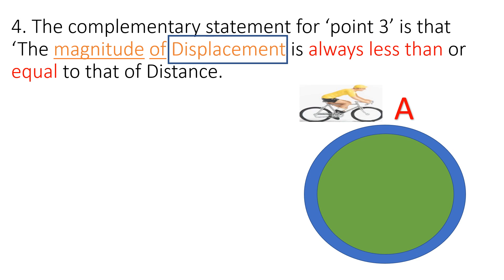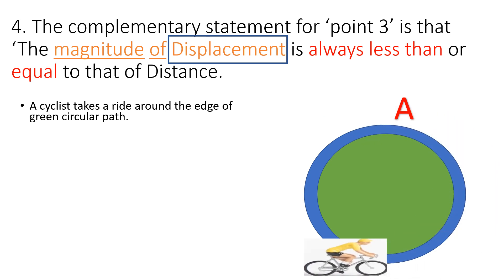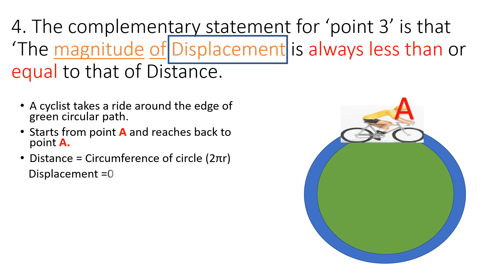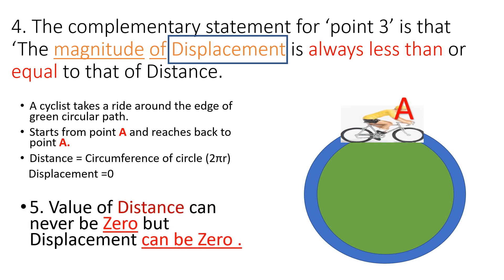Now let's study a new example. In the figure, a cyclist starts riding the bike from point A, takes a round around the green circular path and reaches back to point A. So what is his distance covered? It is equal to the circumference of the circular path, or 2πr. But displacement is 0, because the cyclist has reached back to the same point A. Conclusion: distance can never be 0, but displacement can be 0.